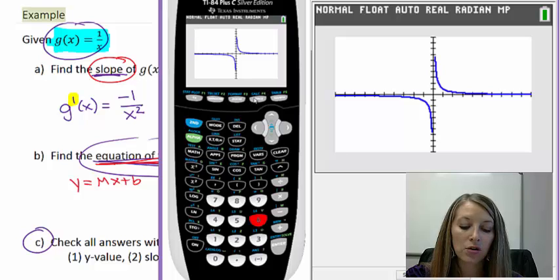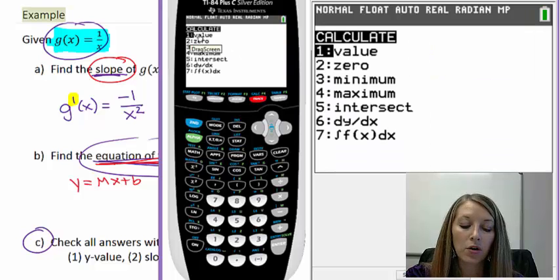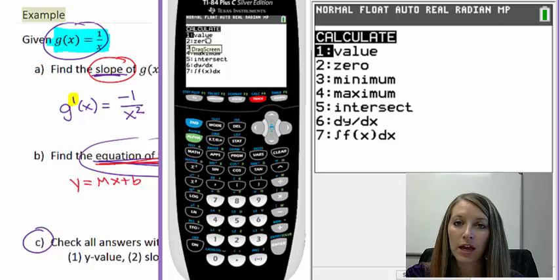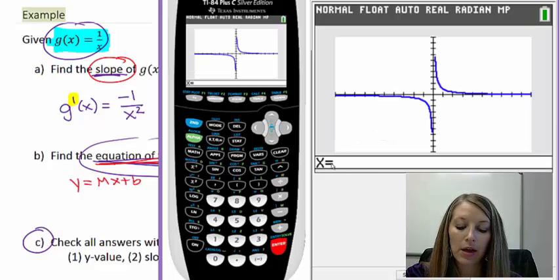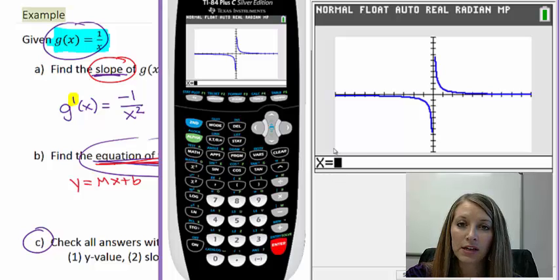We can do that under the calculate feature. If I push the second and the calculate feature, notice the first option is to just give us a value, hence the y value that corresponds with the x value. You can hit 1 or you can hit enter. Now, it prompts you down here to input in what your specific x value is, and then it will give you the corresponding y value.